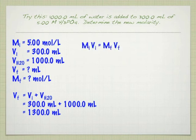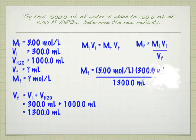And then you can use your equation. So I've got M_i V_i = M_f V_f. So I'm going to solve for molarity final by dividing both sides by V_f. And I'm just going to then plug my numbers in there. I have 5 moles per liter times the original volume of 300 milliliters. Remember, what's that telling you? That's saying, hey, you've got how many moles of this stuff? 5 moles per liter times milliliters.